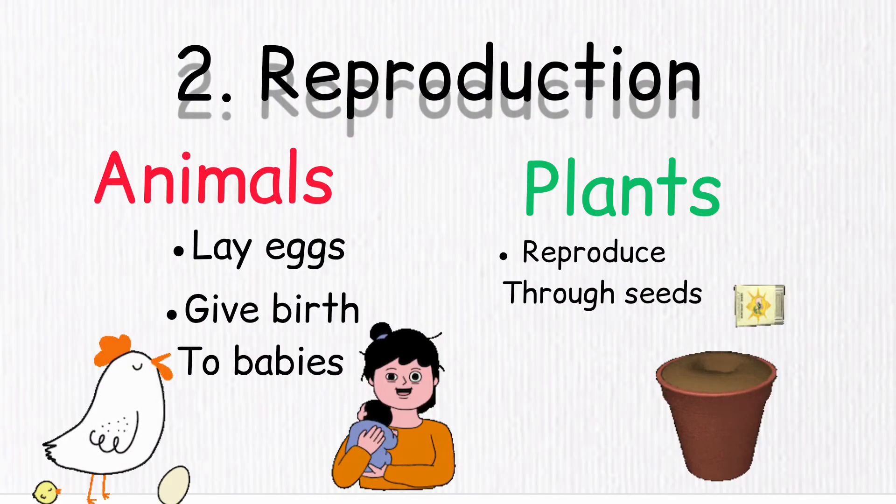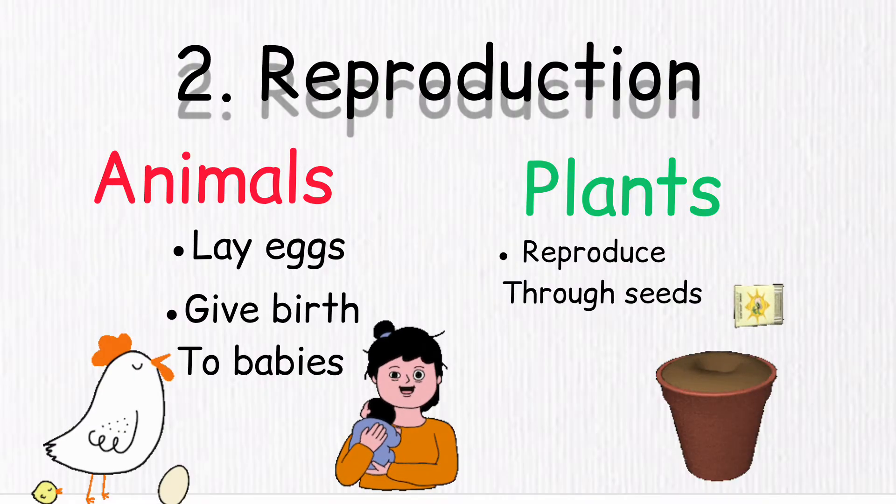Second, Reproduction. Animals lay eggs or give birth to babies, while plants reproduce through seeds.